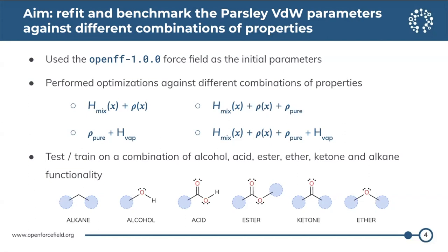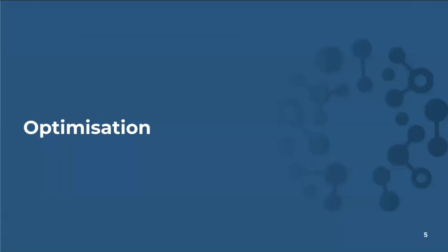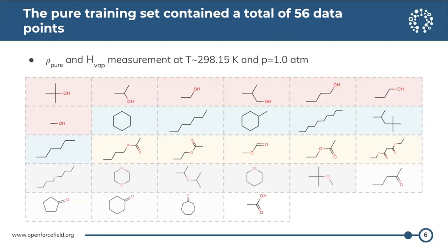For each of these training sets, we focused on a limited set of functionalities for which we had the most diverse data available: alcohols, acids, esters, ethers, ketones, and alkanes, with the hope that results from this functionality set will generalize as we move to broader training and test sets when we refit for SAGE later in the year. The pure training set contained a total of about 56 data points — an even mixture of pure liquid densities and pure enthalpies of vaporization at ambient conditions, for a diverse range of components exhibiting the functionalities of interest.